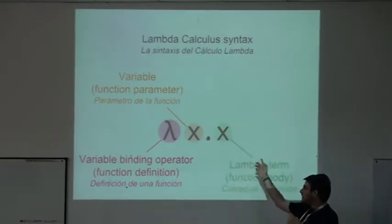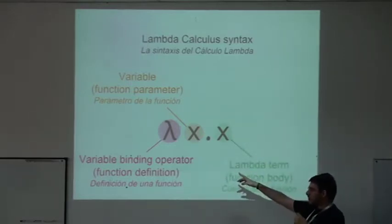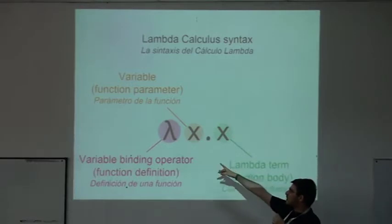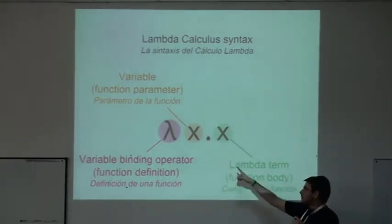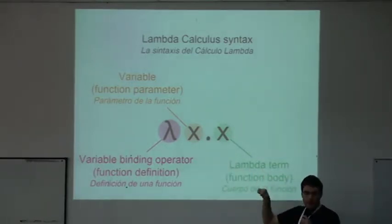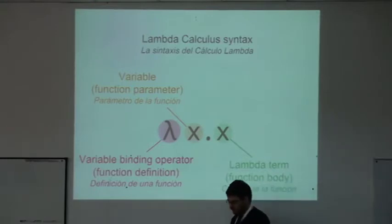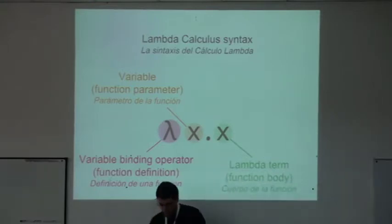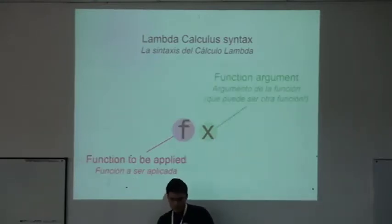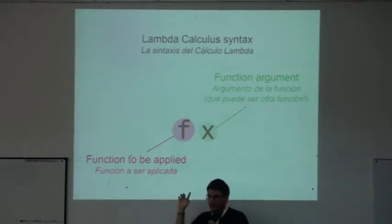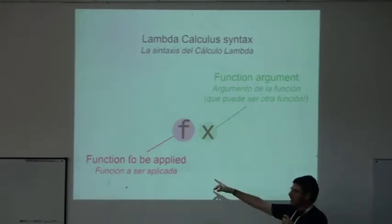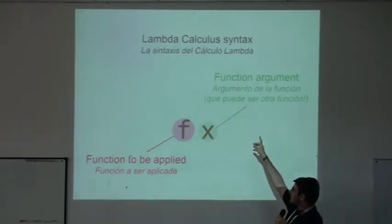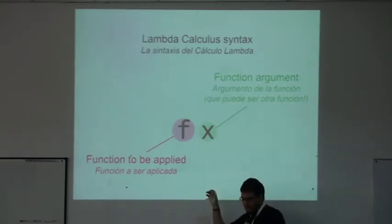Here we have a definition of a function that takes an argument x and returns it — it returns the same thing that you pass into it. The next thing is function application. There we have f of x, where f is the function to be applied and x is the argument to the function.